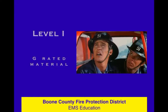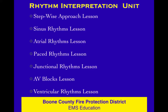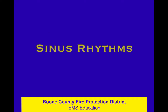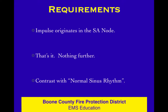Now we're jumping into the various rhythms. We're going to start with sinus rhythms. In our Rhythm Interpretation Unit, we preached about a stepwise approach and we're going to use it as we start looking into the various rhythms. The requirement is that to be a sinus rhythm, the impulse has to come out of the SA node — and that's it.